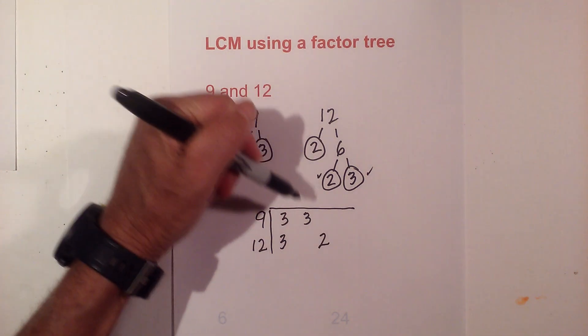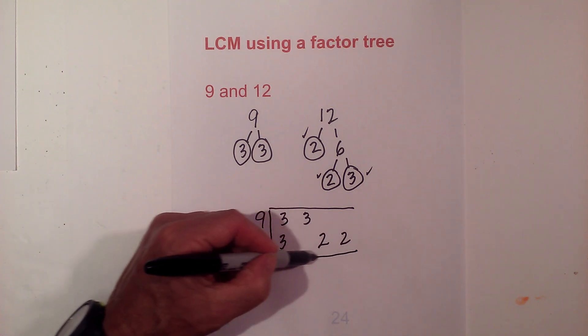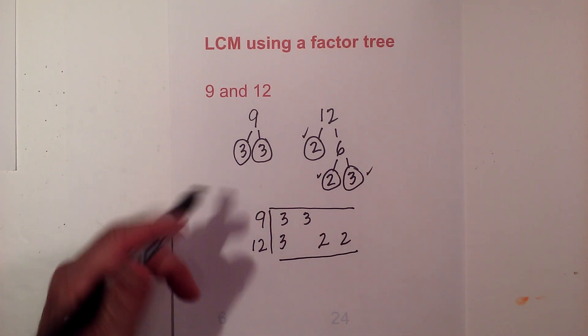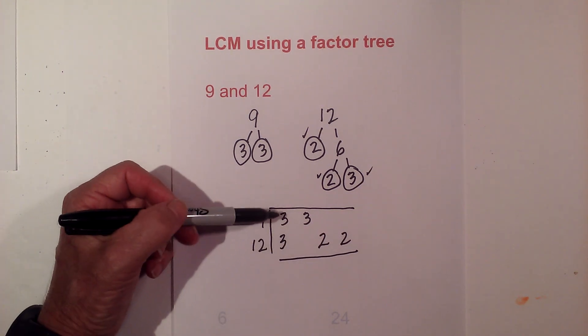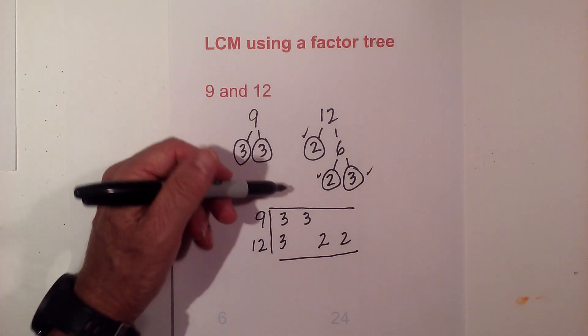I have a 2. Let's put a check by the 2. And another 2 and put a check by that. I then follow this rule: I bring the numbers down but if I have a vertical pair then I only bring one number down.